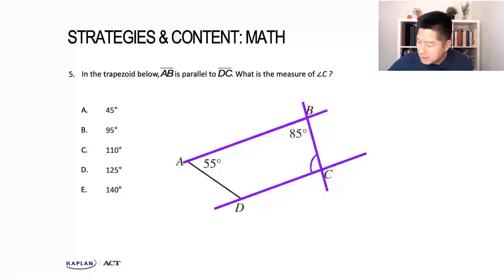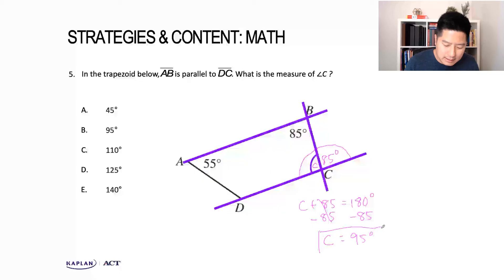If you do remember, if you have parallel lines cut by a transversal, that means the alternate interior angles will be equal to each other. That's great news because angle C and the angle next to it form a straight line, which means that C plus 85 are supplementary - they add up to 180 degrees. So if I subtract 85 from both sides, that tells me that C is equal to 95 degrees, or answer choice B.